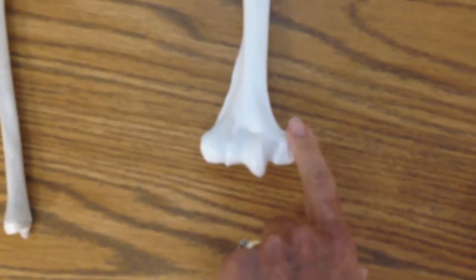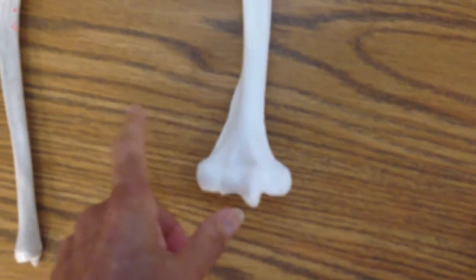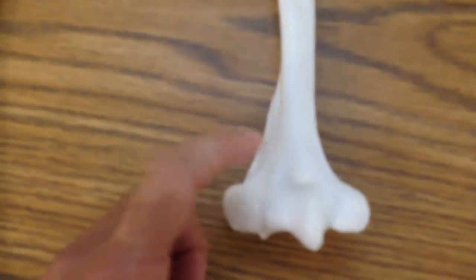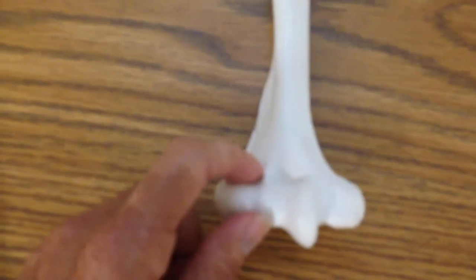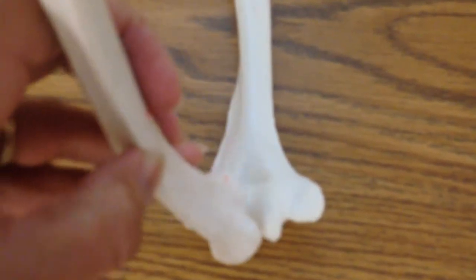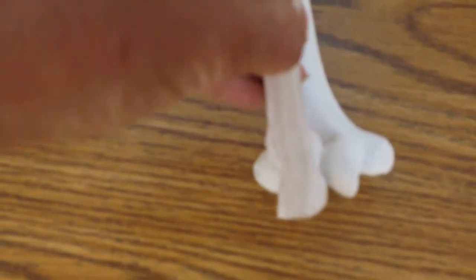Again, we have the medial epicondyle, the lateral epicondyle, the radial fossa, and the coronoid fossa, where the coronoid fits in.